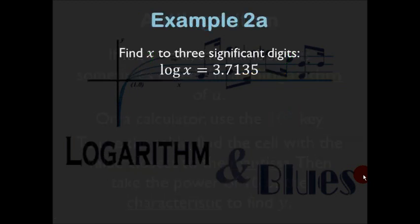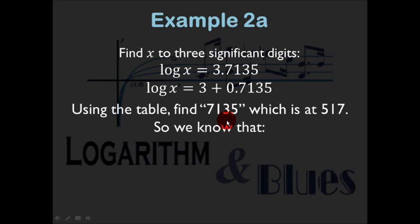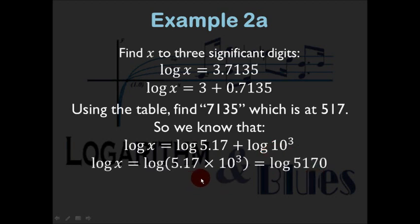Example 2A: find x to 3 significant digits given log x = 3.7135. The whole number immediately below 3.7135 is 3, so rewrite as 3 + 0.7135. Look up 7135 in the table — you find it at row 51, column 7, corresponding to 5.17. So log x = log 5.17 + log 10³, meaning x = 5.17 × 10³ = 5170.